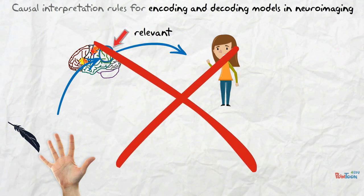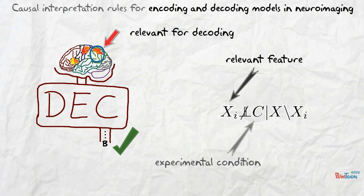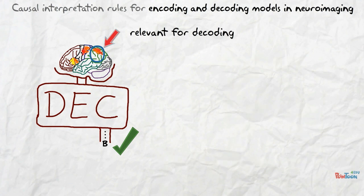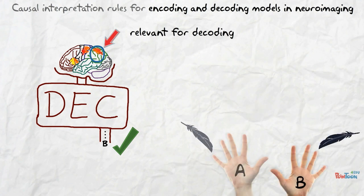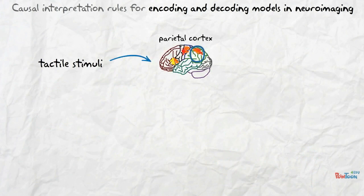Let us explain one illustrative example. Imagine there is a feature that is relevant for the decoding model to correctly predict the experimental condition — that is, it is conditionally dependent on the experimental condition given the other features. For example, the activity in the parietal cortex may be relevant to correctly predict whether the left or right hand has been stimulated. Intuitively, one may conclude from this analysis that tactile stimuli at different body sides are processed in the parietal cortex.